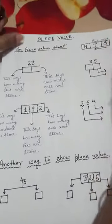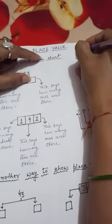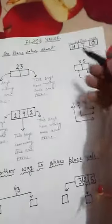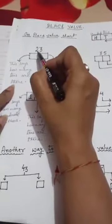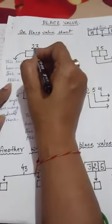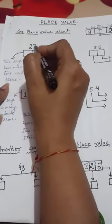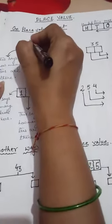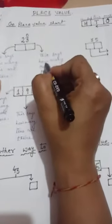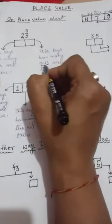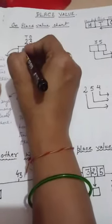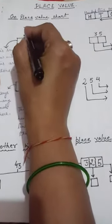H stands for 100. Now, what is the number? 23. From extreme right, which number is there? 3. So we write O here. This says how many ones are there — this is the place value of ones. So we write 3 in the ones place value. And 2, we write here T. This says how many tens are there, so we write 2 for the tens place value.